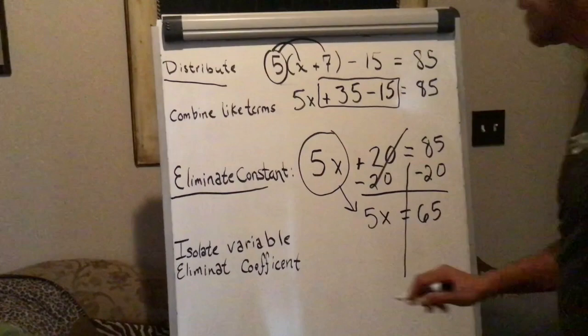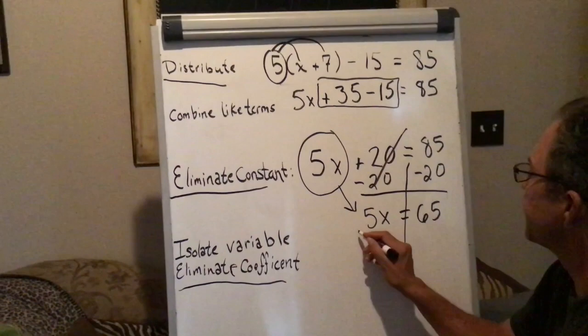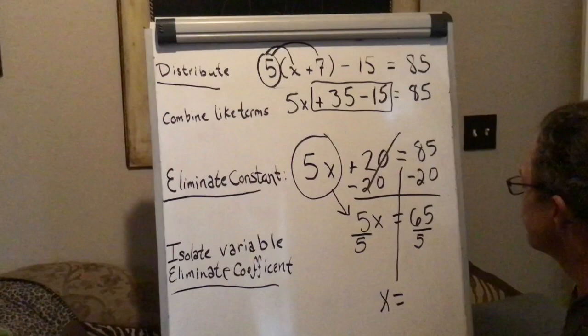Last, we isolate the variable and eliminate the coefficient. I'm going to divide both sides by 5. Therefore, x is equal to 13.